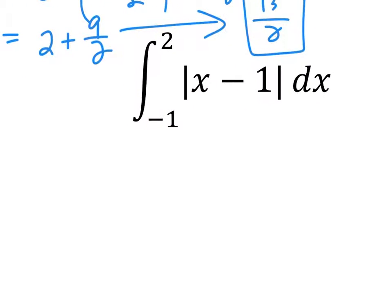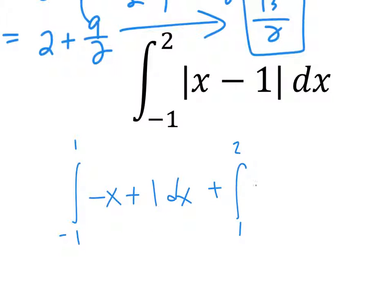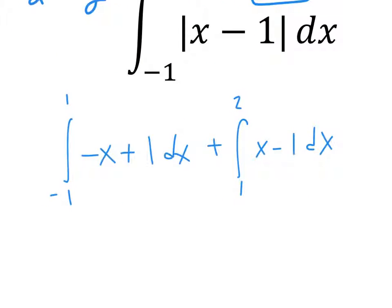It's going to split at one. So then it's going to be from negative one to one, and on the left-hand side it's going to be a negative function. On the right-hand side, it's going to be a positive function. The answer is five over two.